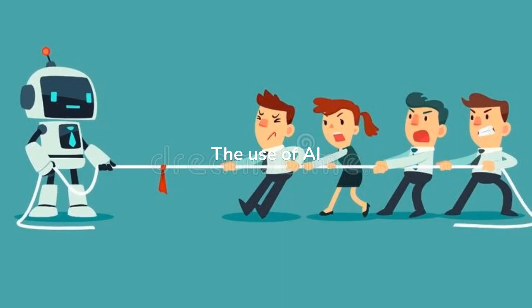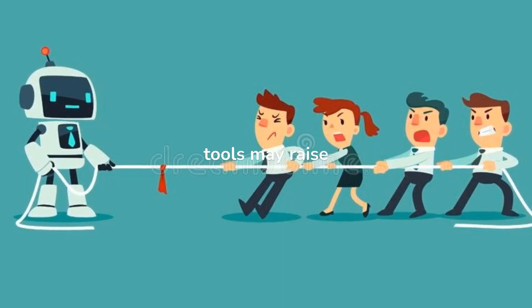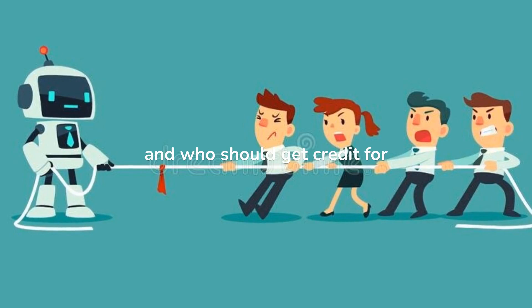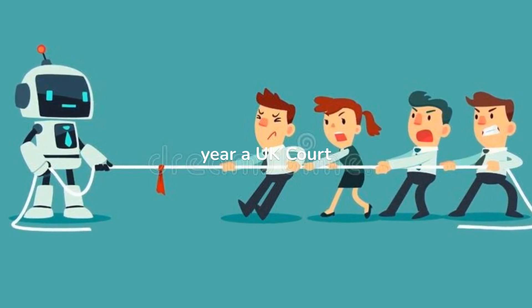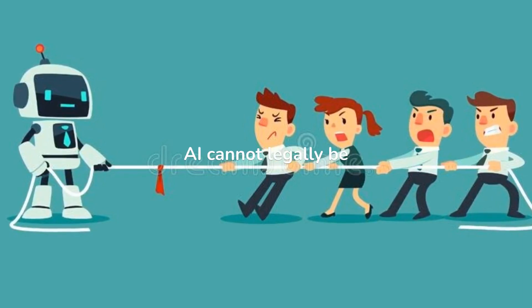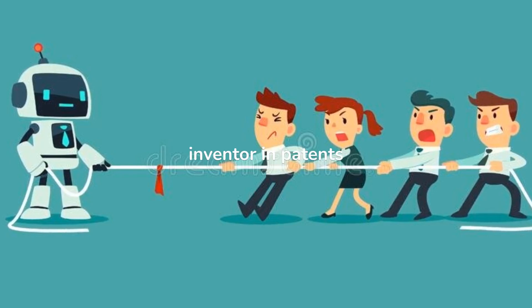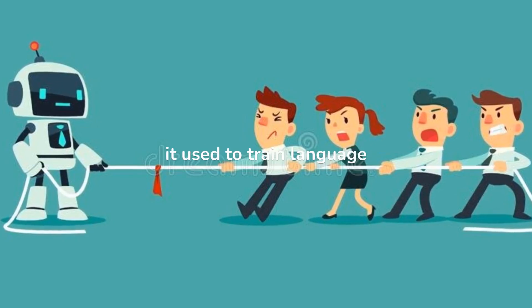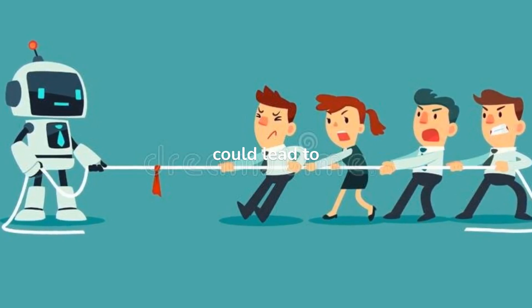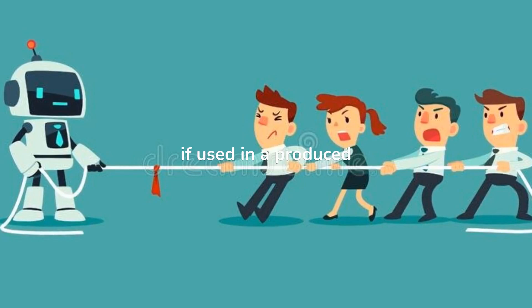The use of AI tools may raise issues of copyright and who should get credit for the script. Last year, a UK Court of Appeals ruled that AI cannot legally be credited as an inventor in patents. DeepMind notes that Dramatron can output snippets of text that it used to train language models, which could lead to accusations of plagiarism if used in a produced script.